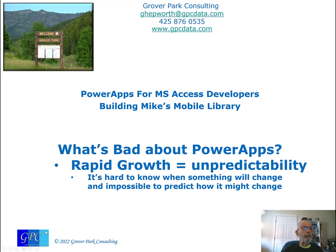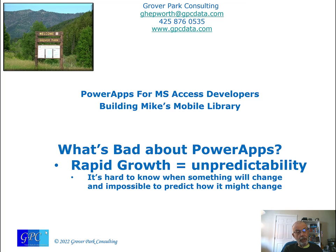What's bad about PowerApps? Rapid growth means a certain degree of unpredictability. It's hard to know when something will change and impossible to predict how it might change. Some things that you had relied on might break because they've been changed or deprecated. But we're aware, over the course of the history of Microsoft Access, of breaking changes — so that's nothing new. There is a certain level of unpredictability about the kinds of breaking changes you'll see in PowerApps very occasionally, but they still happen.